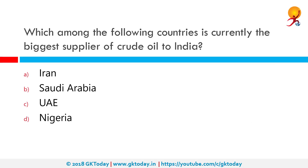Which among the following countries is currently the biggest supplier of crude oil to India? The correct answer is Saudi Arabia. Saudi Arabia replaced Iraq as the top oil supplier to India in July of this year after a gap of more than a year, according to data from industry and shipping sources, as a higher intake of Iranian oil ahead of US sanctions altered trade routes.